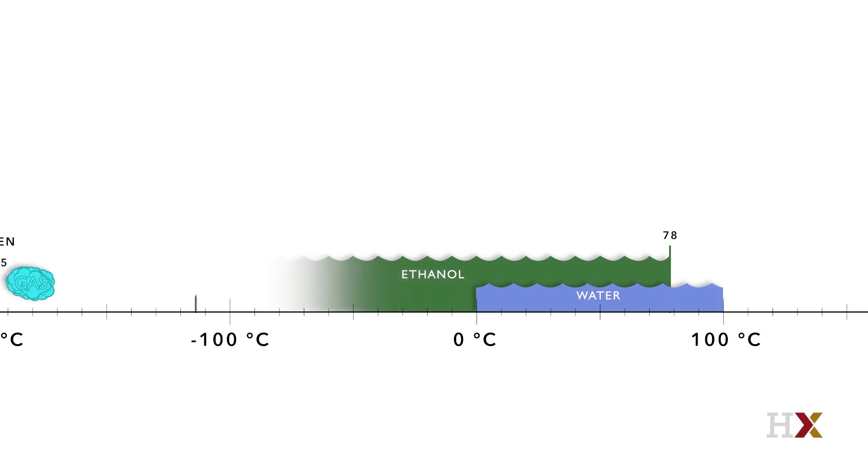Ethanol also can become a solid, and to do that you have to cool it more than you have to cool water. The temperature at which ethanol becomes a solid is about minus 114 degrees Celsius.